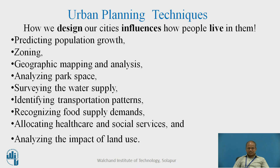Identifying transportation patterns is of utmost importance because transportation lines are actually the bloodlines of the life of a town. Recognizing food supply and demand is important to ensure that the people in the space will be happy and healthy. Allocating health care and social services is important to ensure the health of people living in the town is taken care of. Analyzing the impact of land use is very important because ultimately that decides the direction in which the growth of the town is going to happen in the near future.